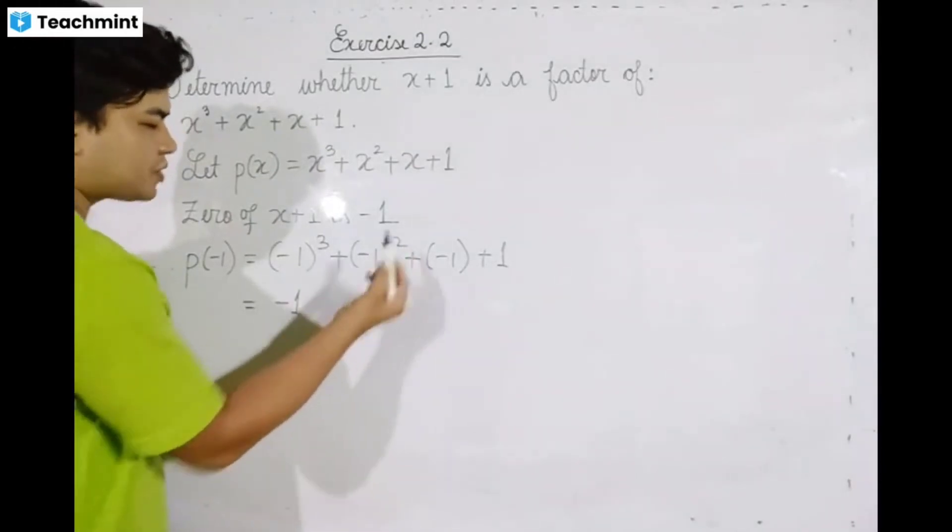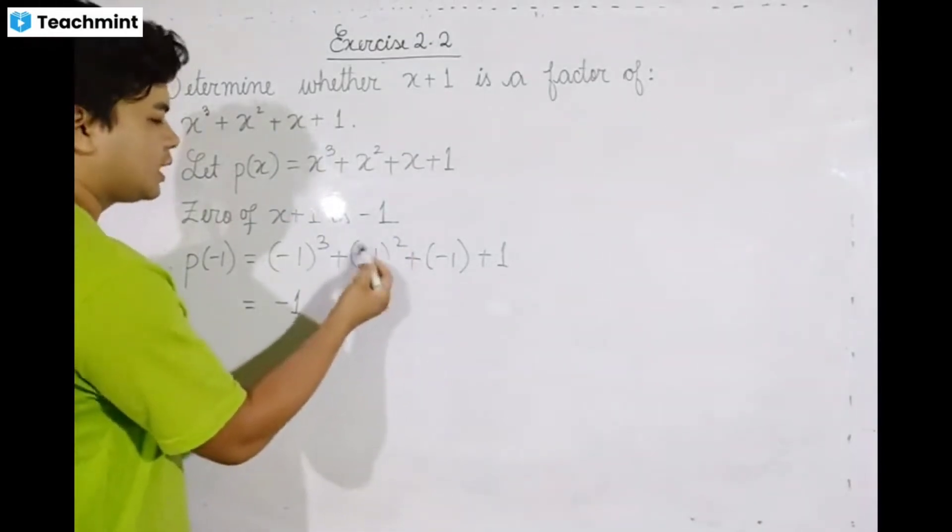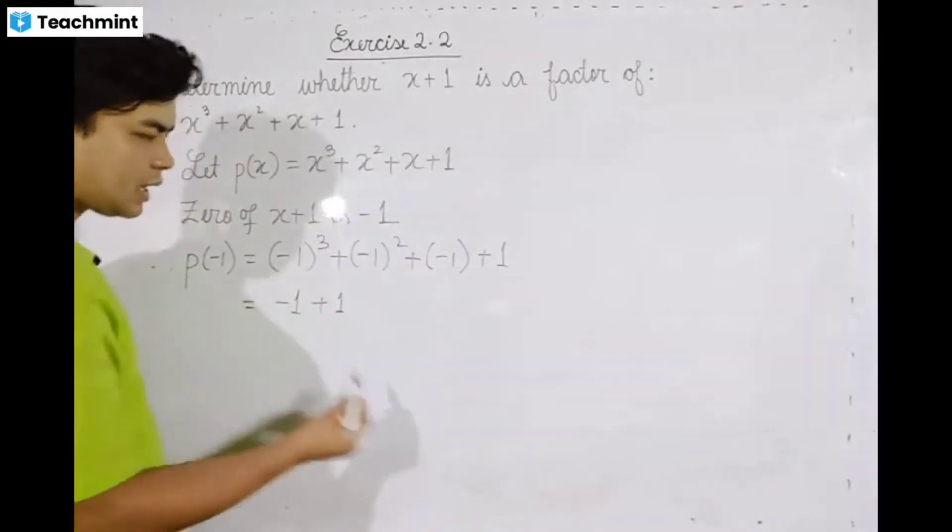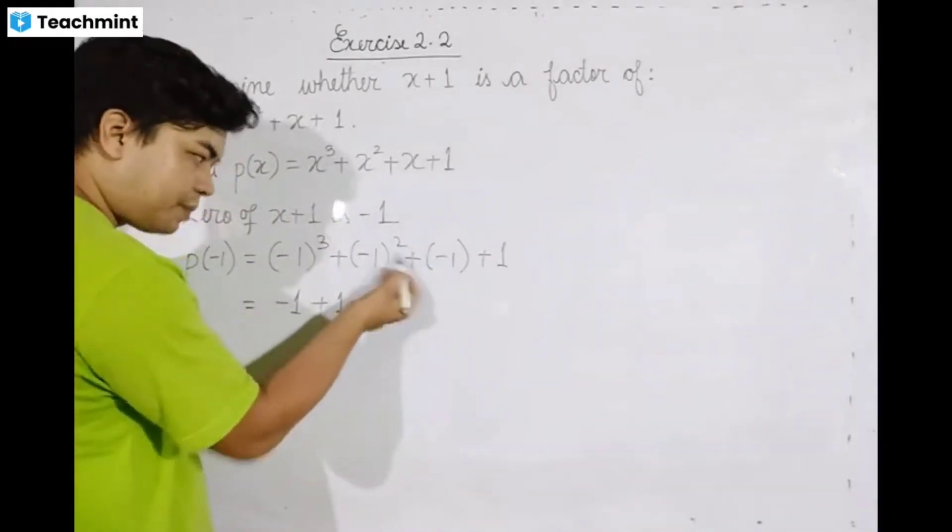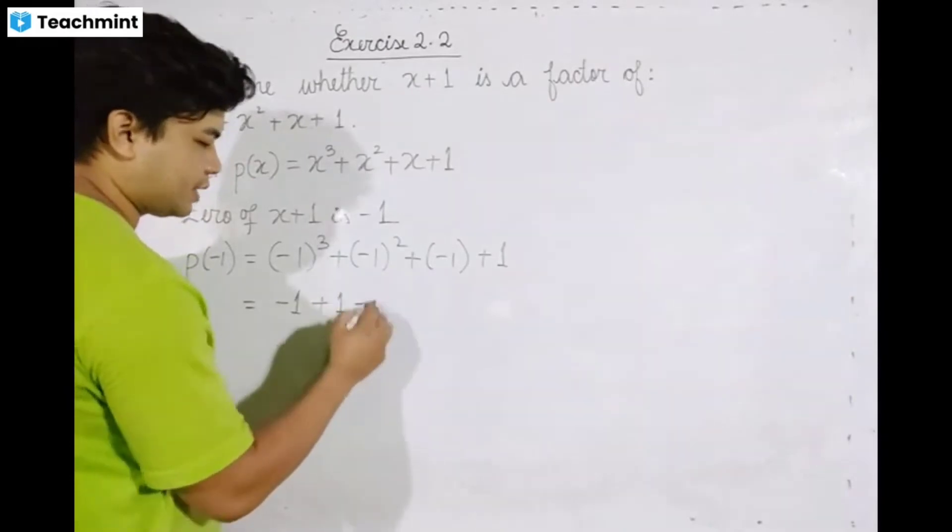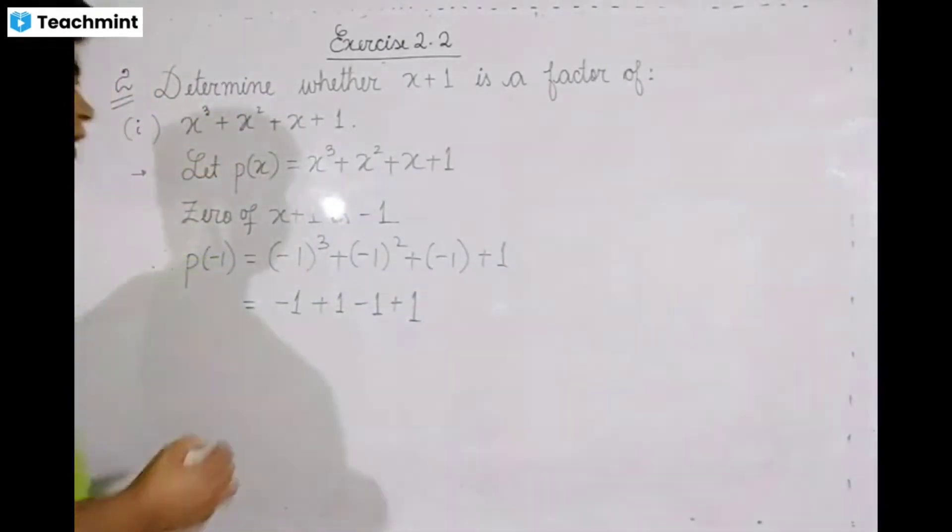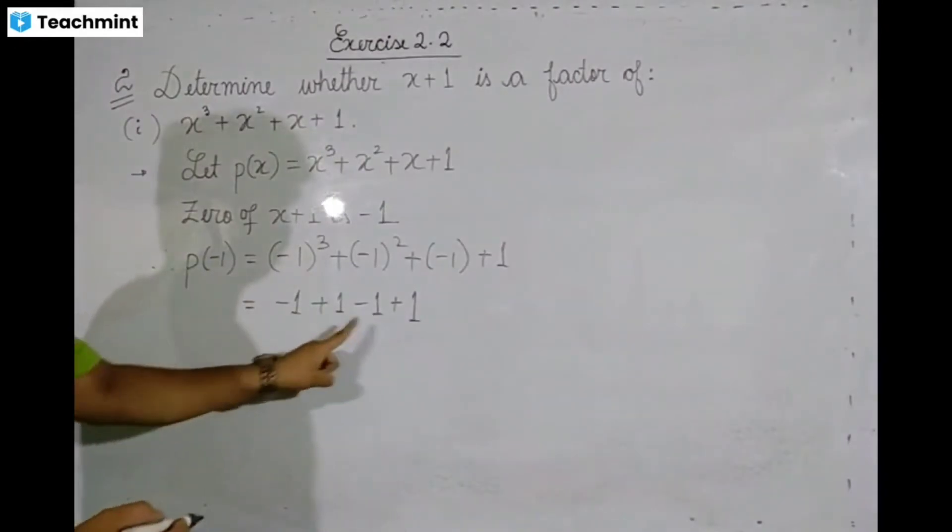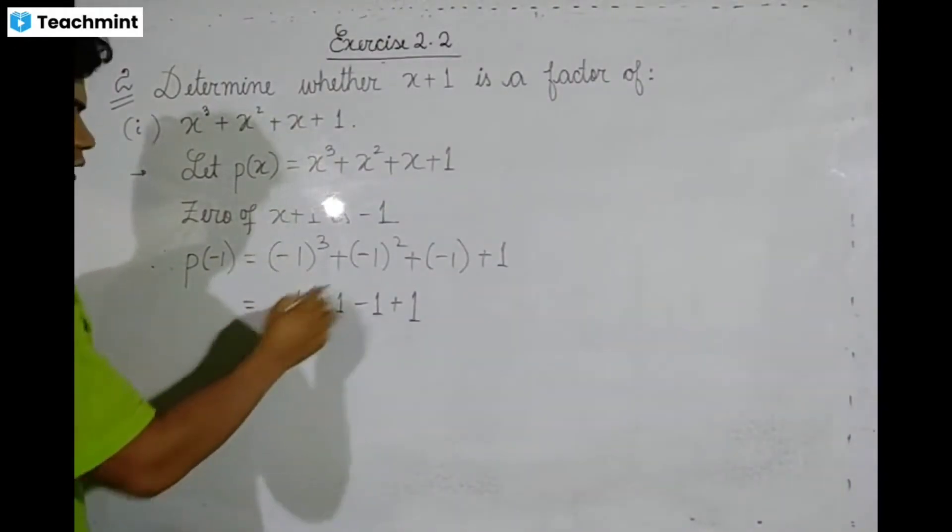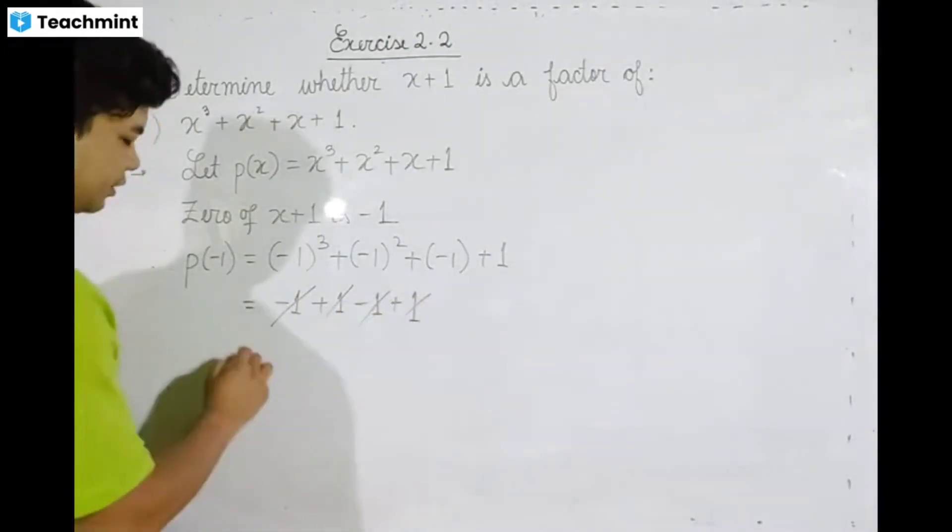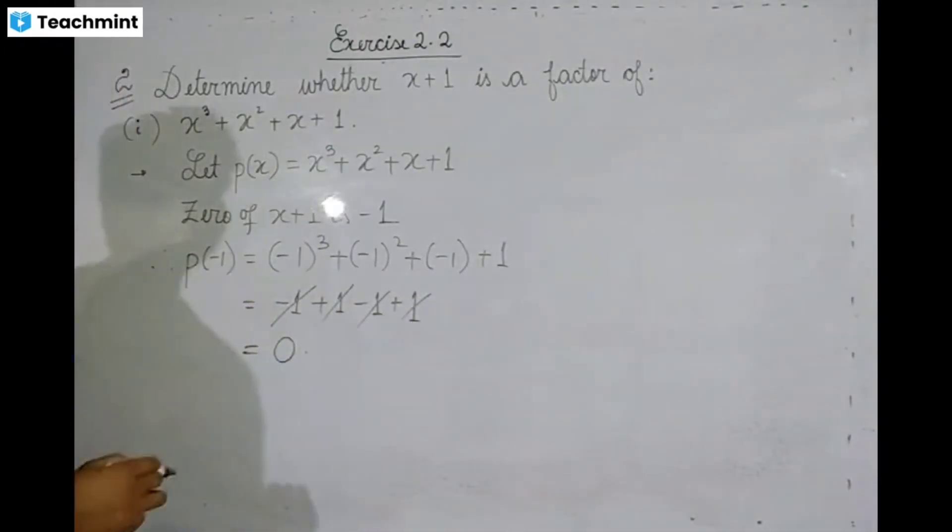So we have minus 1 plus 1 minus 1 plus 1. Minus 1 plus 1 is zero, minus 1 plus 1 is zero. Therefore, the answer is zero.